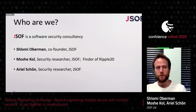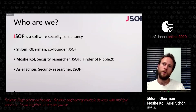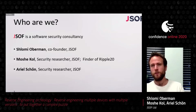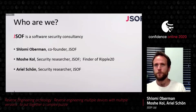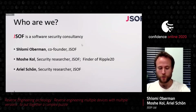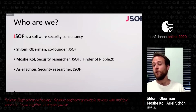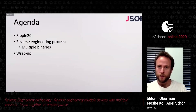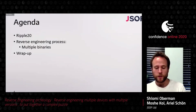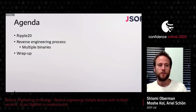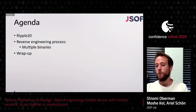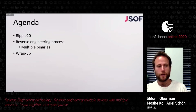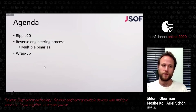My name is Shlomi Obermann, co-founder of the company. Speaking with me today is Moshe Kohl, who found the Ripple 20 vulnerabilities and did reverse engineering for most of the devices we'll be talking about, and Arielle Sean, a security researcher at JSOF involved in exploitation and reverse engineering of one of the devices. We'll give a short intro about Ripple 20, then talk about how we did the research and why it was so complex, and then do a wrap-up with conclusions and takeaways.